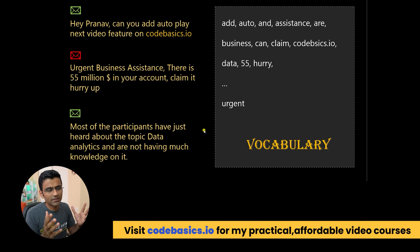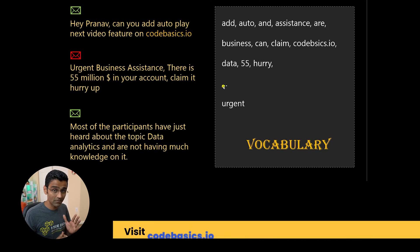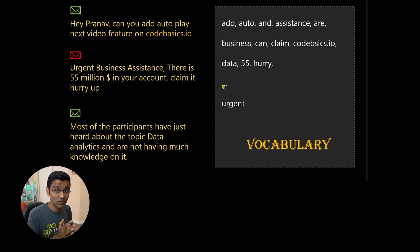And the vocabulary may look like this. I have three dots means let's say I have few thousand words in my vocabulary.